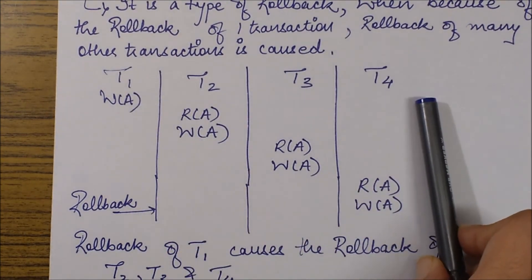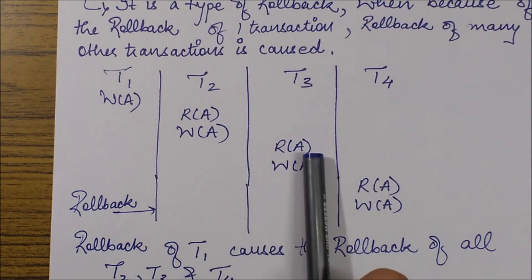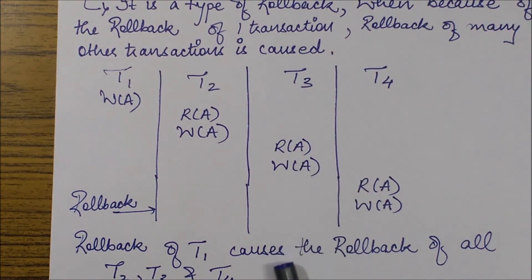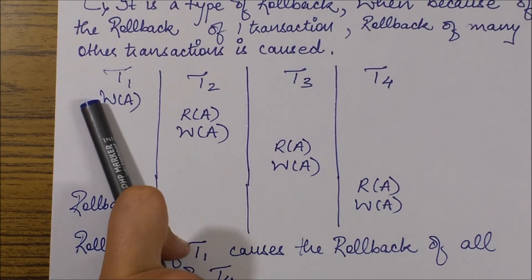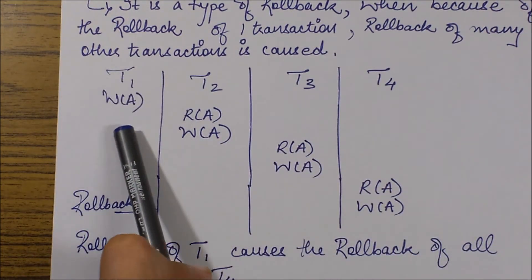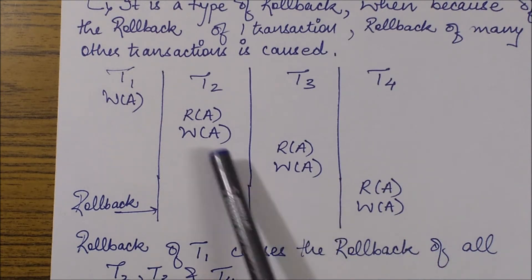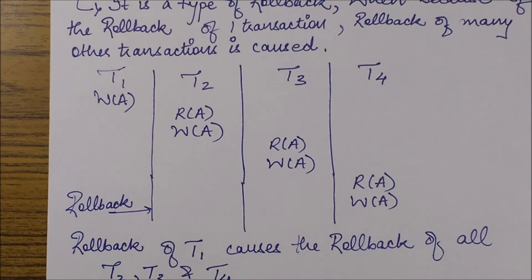We have four transactions in this schedule. T1 performs a write and completes its work. T2 performs its operations and completes its work. T3 performs its operation and completes its work — meaning no other operations are performed by these transactions after this point. Finally, T4 performs its work, and then a rollback occurs in T1. Because of this rollback in T1, I'll have to roll back all of T2, T3, and T4, because they performed work on T1's changes — the changes done by T1 persist in all of them.